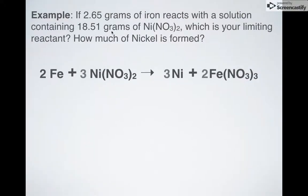Let's do a different example. I have 2.65 grams of iron. I'm reacting with a solution containing 18.51 grams of Ni(NO3)2, which is my limiting reactant and how much nickel do I make? All right, let's plug in what we know. 2.65 grams of this, 18.51 grams of that. And what am I asking for? I'm asking for how much nickel is formed. Let's just focus on how much nickel is being made. So which one of these am I going to run out of? Let's figure it out.